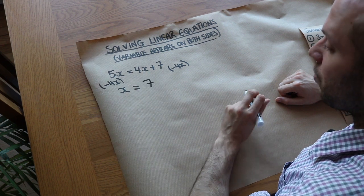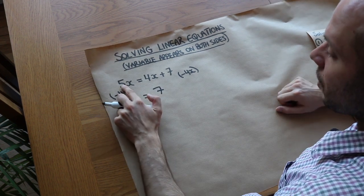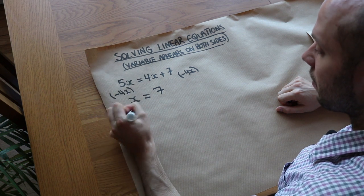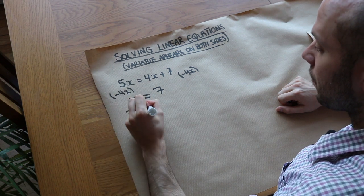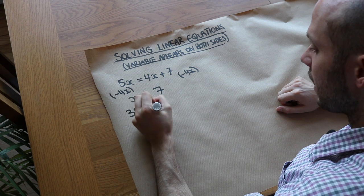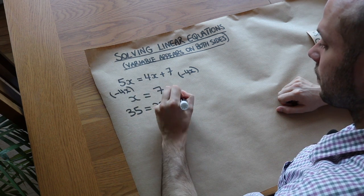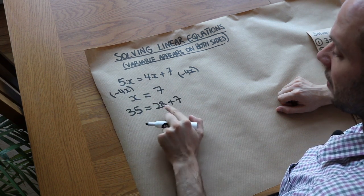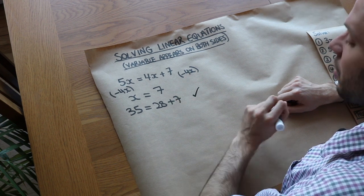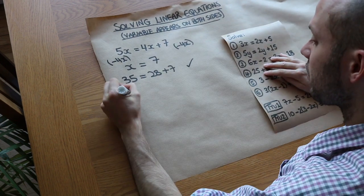Let's just check that actually works. If x is 7, then 5 times 7 is 35. And 4 times 7 plus 7 is 28 plus 7, which is 35. That is indeed true, so it did work. Let's do some more examples.